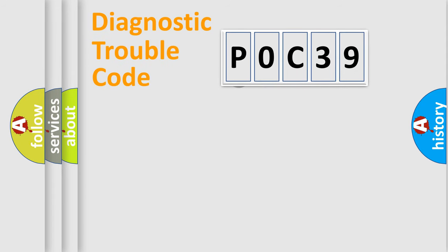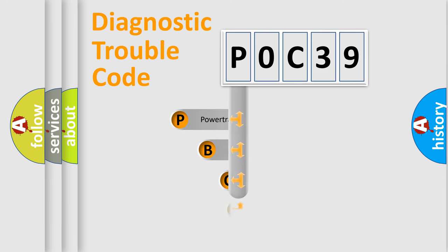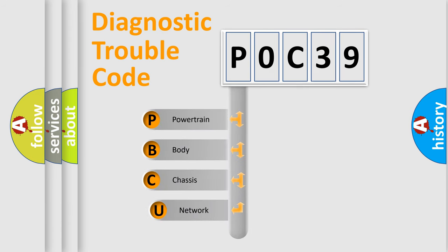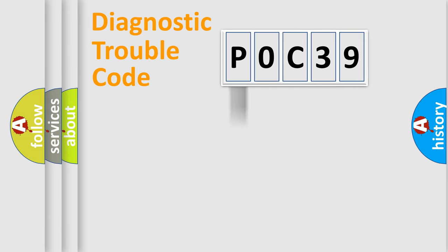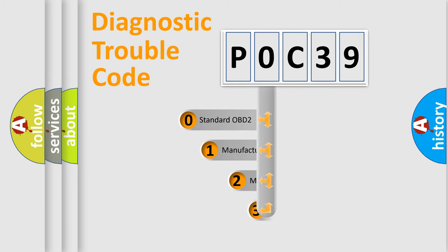First, let's look at the history of diagnostic fault code composition according to the OBD2 protocol. We divide the electric system of an automobile into four basic units: powertrain, body, chassis, and network. This distribution is defined in the first character of the code.